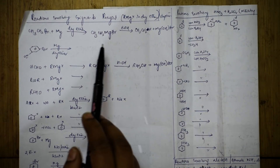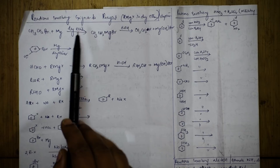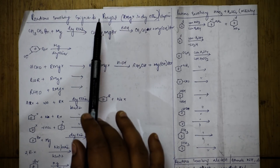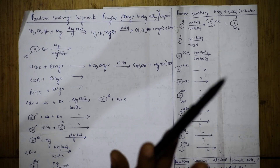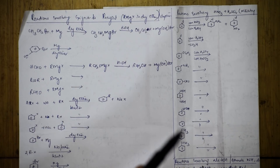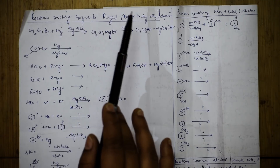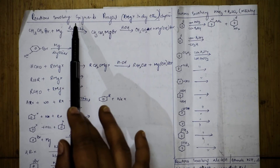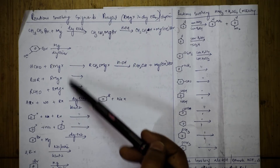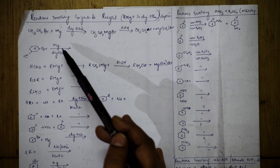Let us come back and see the next set of reactions - a reaction with Grignard's reagent. Remember, Grignard's reagent is RMgX. It basically shows an addition reaction. Whenever you see magnesium with dry ether in your textbook, you are given Grignard's reagent RMgX with dry ether.